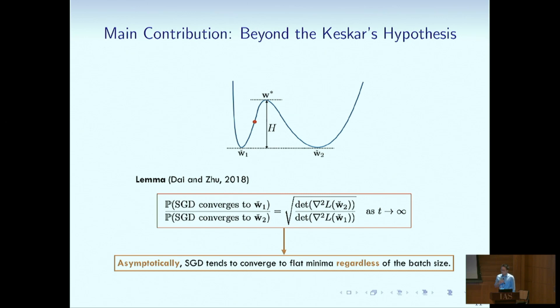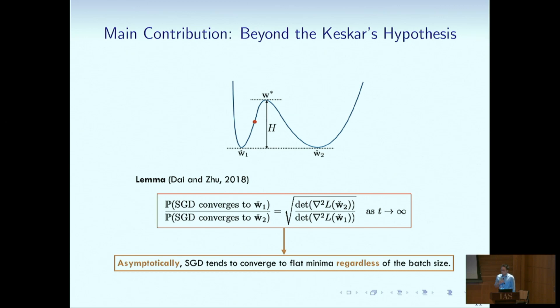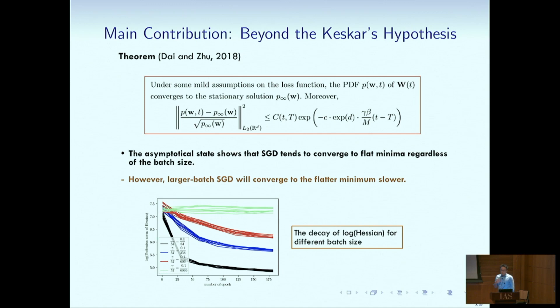From the asymptotic point of view, if we have resource to train the algorithm to infinite time, what will happen? The results show that actually SGD will always go to the flatter minimum, regardless of the batch size. So no matter small batch or large batch, it always go to flatter minimum. But the thing is, convergence rates are different. The small batch go to flat minimum much faster than large batch SGD. So this is a simple experiment on MNIST data. The black curves are small batch and the red curves are the large batch. The small batch converge to flatter minimum much faster than red curves.